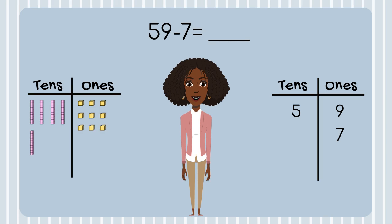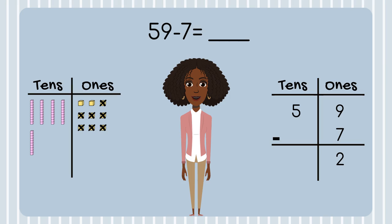Now I'm ready to subtract. I'm going to start in my ones place. I have 9 ones, and I need to subtract 7. I have 2 ones left. Now I'll subtract my tens place. I have 5 tens, and I don't need to subtract anything, so I still have 5 tens. 59 minus 7 equals 52.